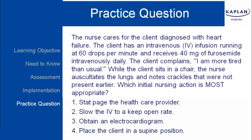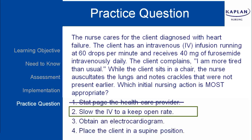Let's read the answers together: stat page to the health care provider; slow the IV to keep vein open; obtain an electrocardiogram; or place the client in a supine position. We don't want to stat page the health care provider — we want to intervene to prevent further deterioration. The health care provider can be notified following an intervention. Slow the IV to keep open rate is the correct answer. The client is displaying symptoms related to a deteriorating cardiovascular system, and you want to prevent further deterioration by slowing the IV rate.